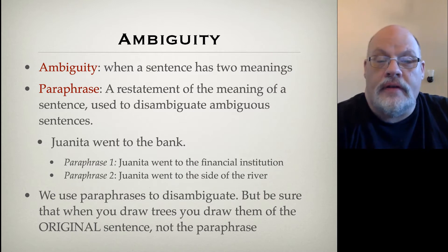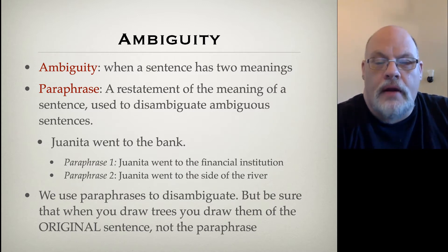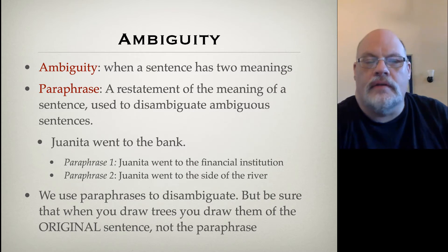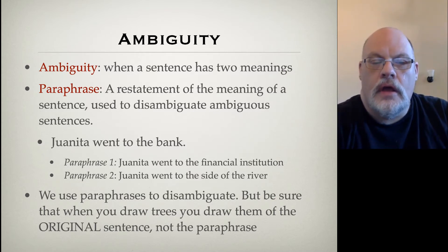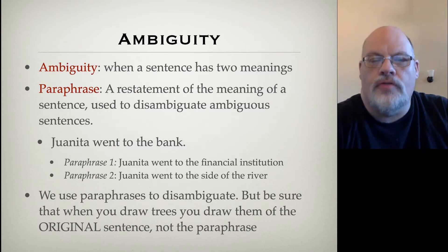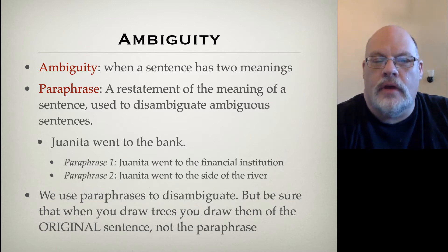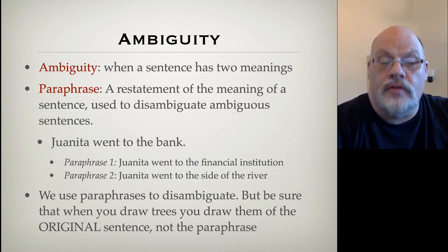For example, 'Juanita went to the bank' has two meanings. It can mean Juanita went to the financial institution, or it can mean Juanita went to the side of the river. Those paraphrases tell us the different possible meanings of the sentence. When we're drawing trees, we draw trees of the original sentence — we only use paraphrases to distinguish the meanings assigned to alternative trees. We always draw the tree of the original sentence, not the paraphrase.